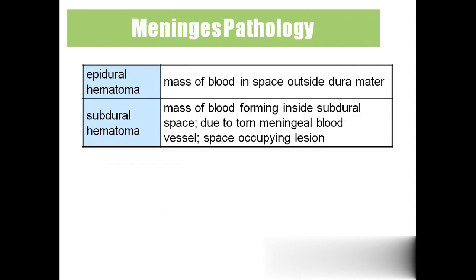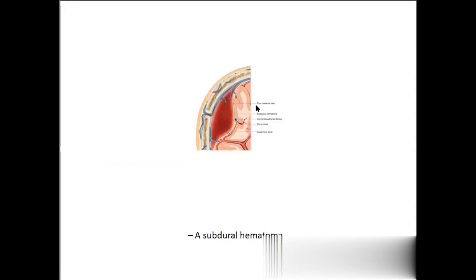'Epidural hematoma' and 'subdural hematoma' — in the meninges we have three layers: dura mater, arachnoid mater, and pia mater. The space below the dura mater is the subdural space. If there is any rupture of blood vessels leading to bleeding in that area, the blood clots there — a blood clot in the subdural region we call subdural hematoma. A blood clot in the epidural region we call epidural hematoma. These must be treated immediately, otherwise it leads to brain damage and the person may die.